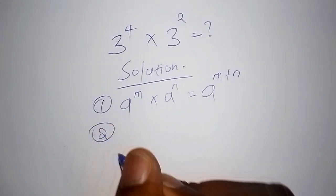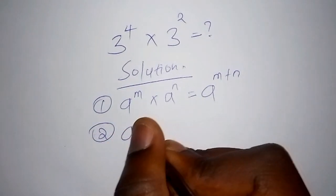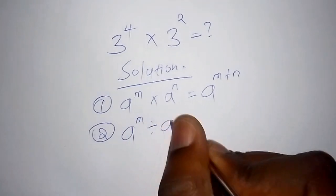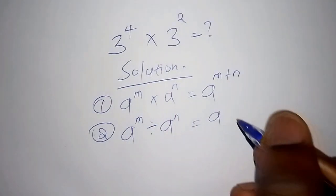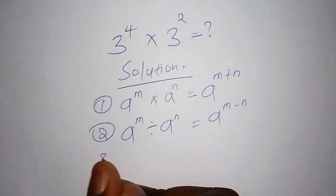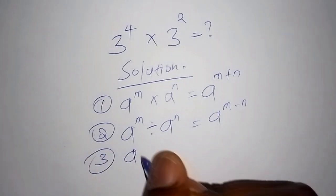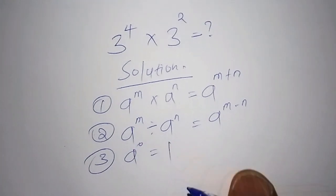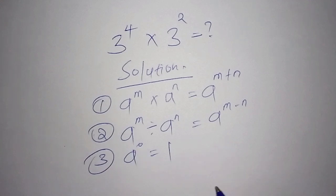The second law — Law 2 — says that a to the power of m divided by a to the power of n equals a to the power of m minus n. The third law says that a to the power of 0 is equal to 1. Make sure you take notes on these laws.